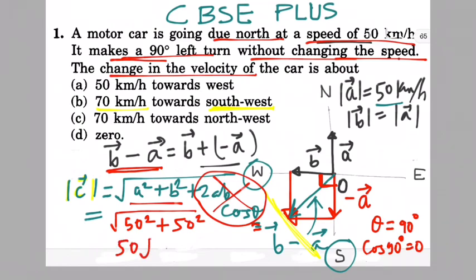Which is approximately 70 km/h. So the correct answer is 70 km/h towards southwest, option B.